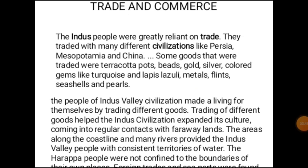Trade and commerce: The Indus people were generally reliant on trade. They traded with many different civilizations like Persia, Mesopotamia, and China. Goods that were traded included terracotta pots, beads, gold, and silver. Apart from trade within India, they had trade relations with countries like Persia, Mesopotamia, and China. Since there was no currency at that time, a barter system operated — through the exchange of goods they also promoted their culture.